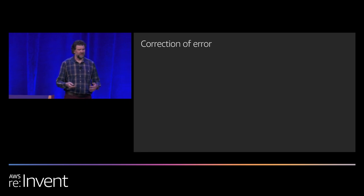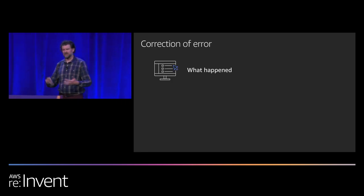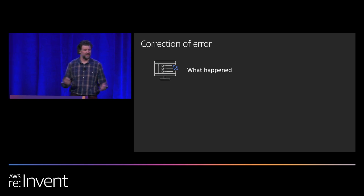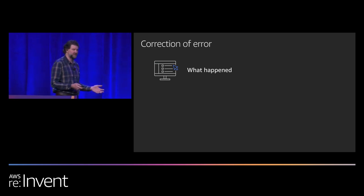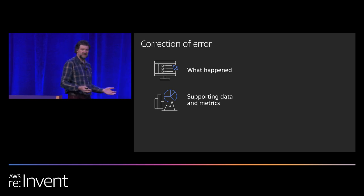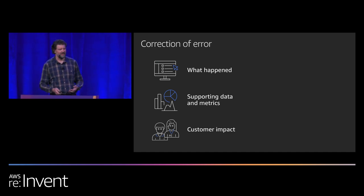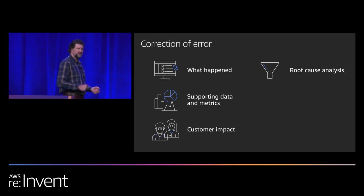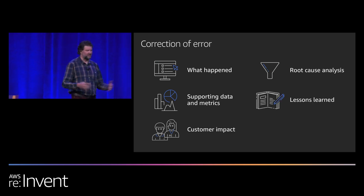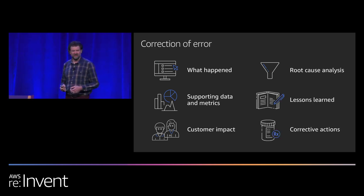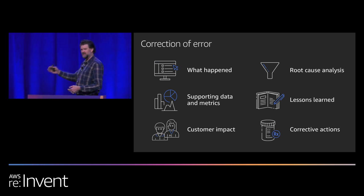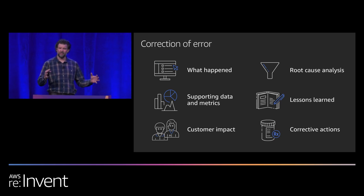When a service team writes a correction of error, they write a number of different sections. The first part is a summary of what happened and the triggering cause. They provide supporting metrics and data in the form of graphs and charts. They provide a statement of what the customer impact was — the types of customers impacted and how long they were impacted. They do a five-whys drill down into the root cause. They take away a number of lessons learned. And importantly, they take a number of corrective actions and apply those back to the way they operate their service.